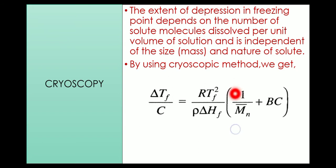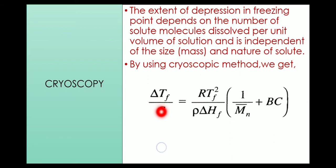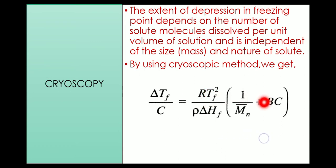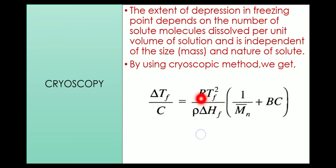Here, Mn̄ is the number average molecular weight, delta Tf is the depression in the freezing point, C is the concentration, rho is the density of the solvent, Tf is the freezing point of the pure solvent, B is a constant, delta Hf is the heat of fusion of the solvent, and R is the universal gas constant.